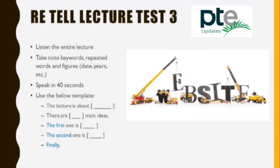Today's lecture is about setting up a website. I'm going to be focusing on things that you need to consider to ensure your website really adds value to the people using it. There are three main areas you need to think about. The first and most important thing is who is your target audience — when you're creating a new website, you really need to think about who the users are and what information they'll be looking for.